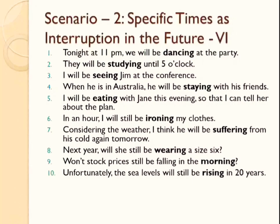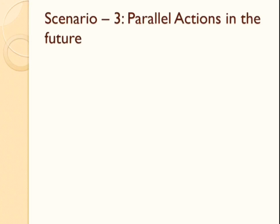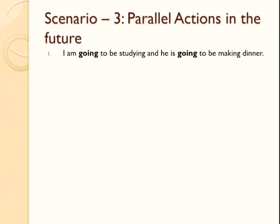Enough examples for scenario number two. Shall we now talk about scenario number three? Scenario number three is about parallel actions in the future. You might be thinking — parallel actions, what is that? It is fairly possible that two actions get started at the same time, trigger simultaneously, and continue for a certain time. For example: 'I am going to be studying and he is going to be making dinner.' At 7 p.m., I will start studying and he might start preparing dinner. When Ellen is reading, Tim will be watching TV. Please notice the parallel actions taking place.